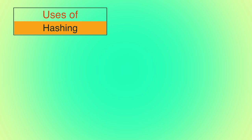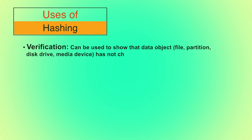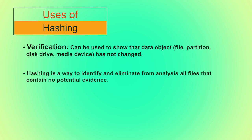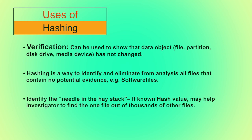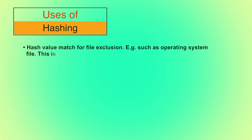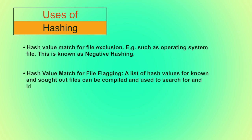The uses of hashing include verification — showing that a data object has not changed. It helps forensic experts while producing evidence in court. Hashing is also used to identify and eliminate from analysis all files with no potential evidence, such as software files. It can also identify a specific file out of thousands using known hash values. Hash value matching for file exclusion (negative hashing) and hash value matching for file flagging — compiling a list of hash values for known files to identify items of interest to investigators.